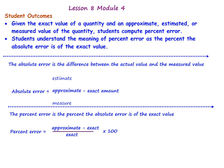Student outcomes from this lesson: given the exact value of a quantity and an approximate, estimated, or measured value of that quantity, students compute percent error. Students understand the meaning of the percent error as the percent the absolute error is of the exact value. The absolute error is the difference between the actual value and the measured value, found by subtracting the exact amount from the approximate amount. The percent error equals the approximate amount minus the exact amount, divided by the exact amount, multiplied by 100 to convert to a percent.